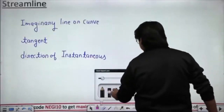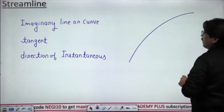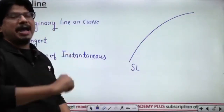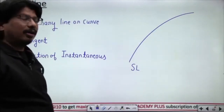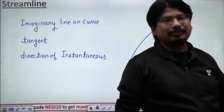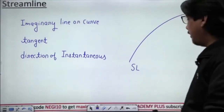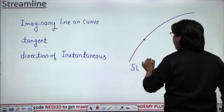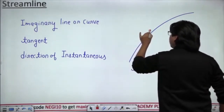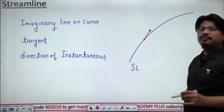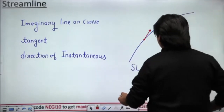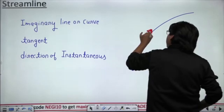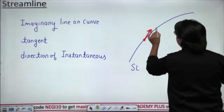Let us suppose this is some streamline. Tangent drawn to it at any point gives the direction of instantaneous velocity of the fluid particle present at that point. If at this point we draw a tangent, the direction of instantaneous velocity of the fluid particle at that point is obtained.